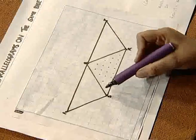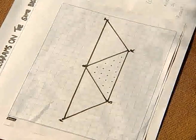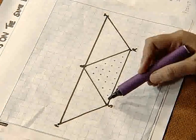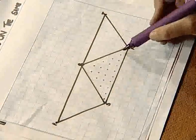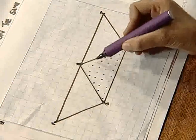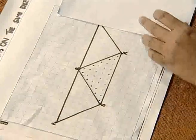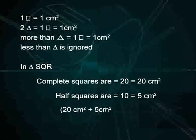Now let us count the number of more than half squares. In triangle QRS, we do not have any more than half squares. For half squares, we find 1, 2, 3 ... up to 10. So we have 10 half squares, which equals 5 centimeter square. There is no more than half square and no less than half square. Adding up, we find 25 centimeter square. So the area of triangle SQR is 25 centimeter square.